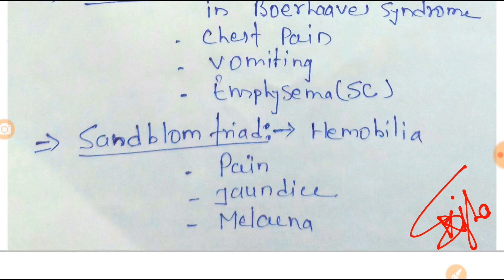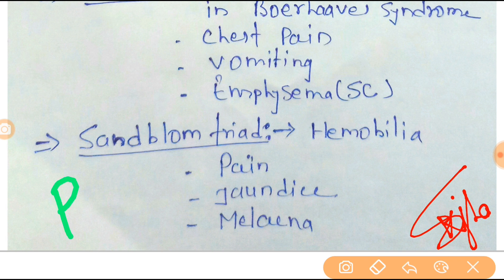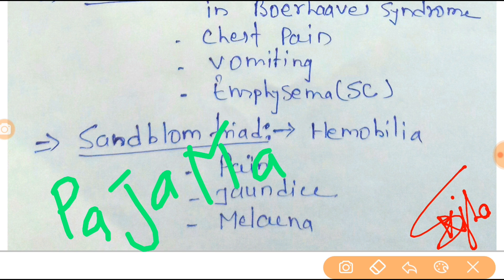Next is Sandbloom's Triad, found in hemobilia. The triad is pain, jaundice, and melena. You can easily remember it by the trick PAJAMA: PA for pain, JA for jaundice, MA for melena.